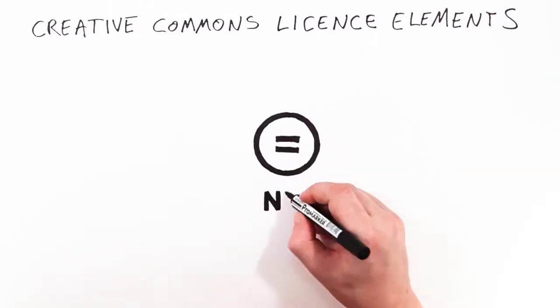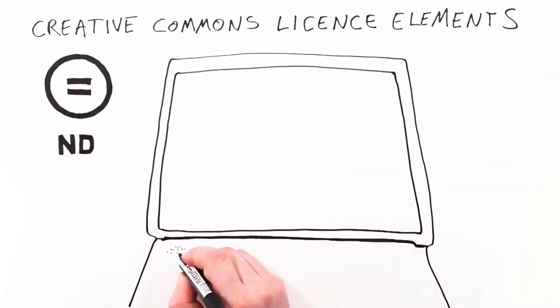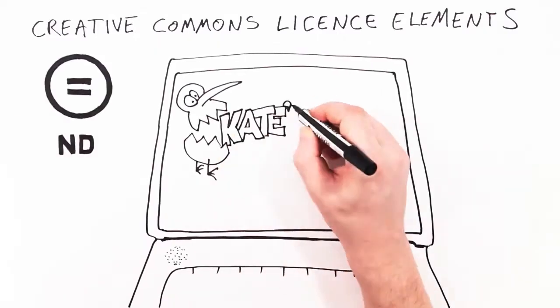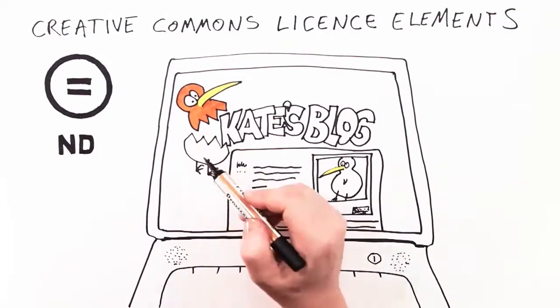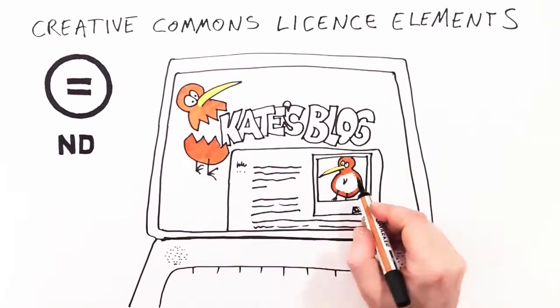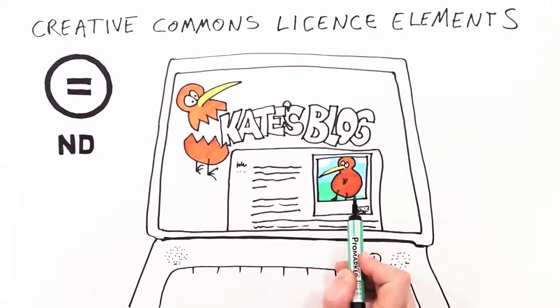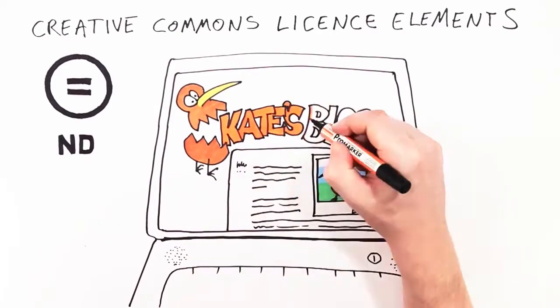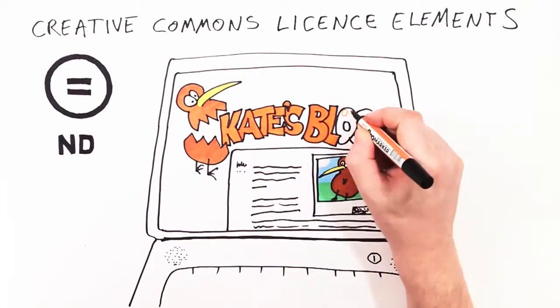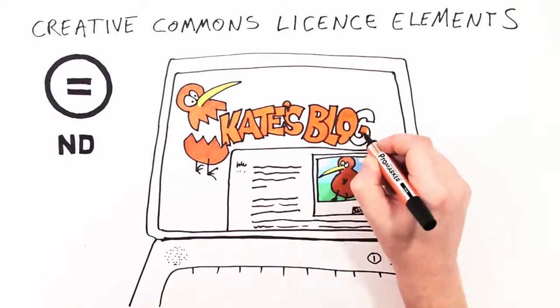This is no derivatives, and it means that Kiri hasn't given permission to change her photo. Kate can use CC Kiwi on her design blog but will need to ask Kiri before retouching or mixing up the image.